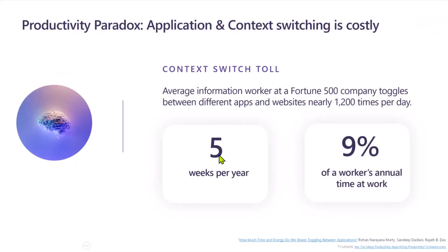Then we talk about another paradox — the productivity paradox — which is essentially coming from the context switching mentioned in the previous slide. According to research done by many reputed institutes such as Harvard, the average information worker at a Fortune 500 company toggles between different apps and websites nearly 1,200 times per day. This amounts to around five weeks per year, or 9% of a worker's annual time at work — all of this toll coming from context switching.